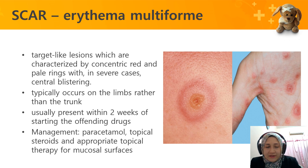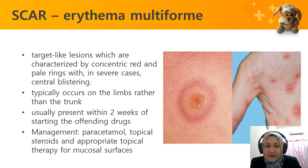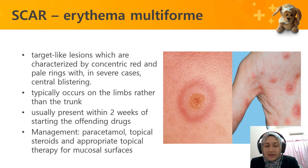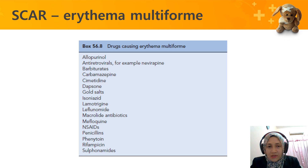Erythema multiforme presents as target-like lesions characterized by concentric red and pale rings. In severe cases, there is central blistering, with the surrounding area being red and inflamed. It typically occurs on the limbs rather than the trunk, presents within two weeks of starting the drug, and is managed with paracetamol or topical steroids. Causative drugs include allopurinol, barbiturates, carbamazepine, and cimetidine.